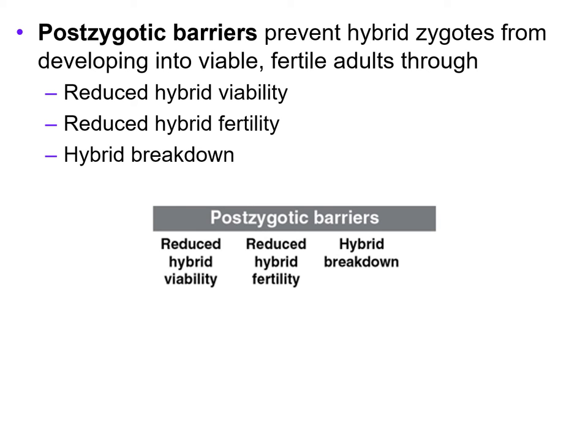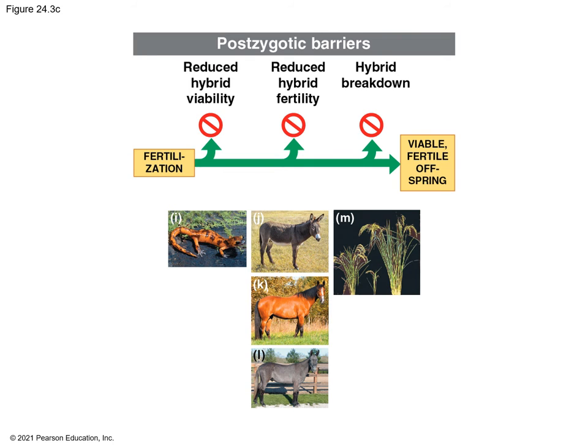Now we will look at post-zygotic barriers. Post-zygotic barriers prevent hybrid zygotes from developing into viable, fertile adults through reduced hybrid fertility, reduced hybrid viability, and hybrid breakdown. Now the sperm and egg have actually interacted and produced a zygote — but what happens after fertilization can still be a barrier. We will look at each one of these that occur after fertilization has occurred.